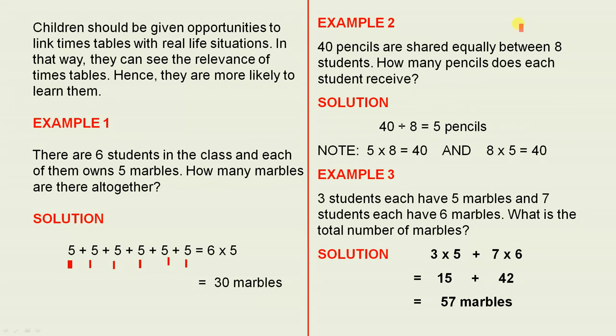Example 2. 40 pencils are shared equally between 8 students. How many pencils does each student receive? Well, 40 shared among 8 means 40 divided by 8. That gives you 5 pencils. So each student gets 5 pencils. Now, following on from this, remember what we saw earlier. 5 times 8 equals 40, and 8 times 5 equals 40. So there's the link between division and multiplication.